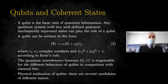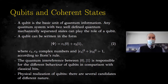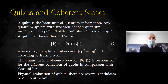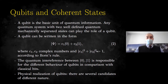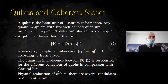Something from quantum information theory: we work with qubits. A qubit is the quantum analog of the classical bit and is the basic unit of quantum information. Any quantum system with two well-defined, quantum mechanically separated states can play the role of a qubit. A qubit can be written in the form of a superposition c₁|0⟩ + c₂|1⟩, where c₁ and c₂ are complex numbers. Born's rule dictates that |c₁|² + |c₂|² = 1. The quantum interference between |0⟩ and |1⟩ is responsible for the different behavior of qubits compared to classical bits. The physical realization of qubits is a very interesting open problem in quantum physics.